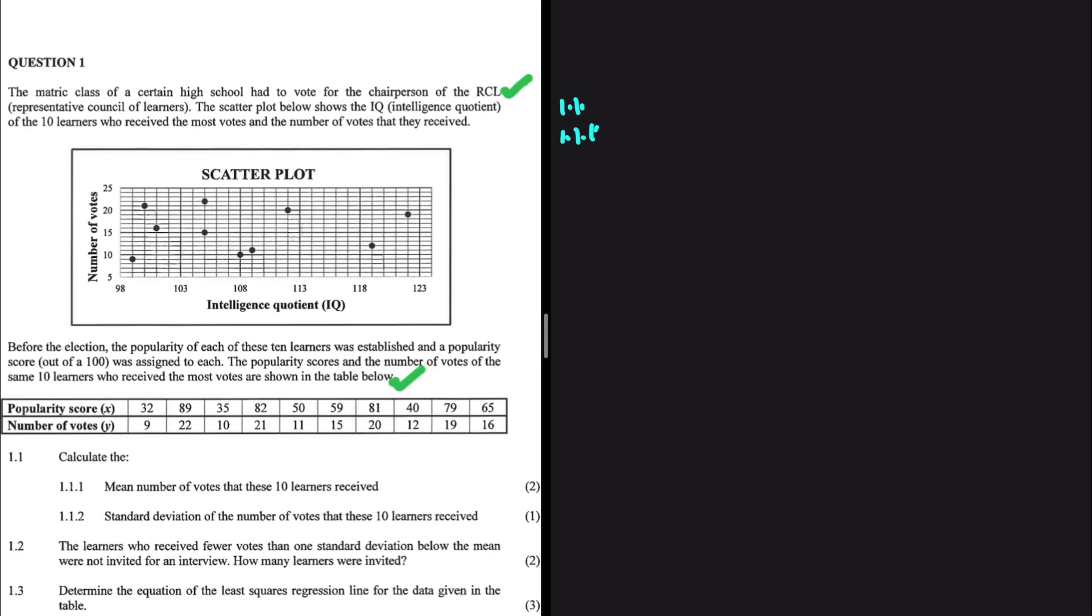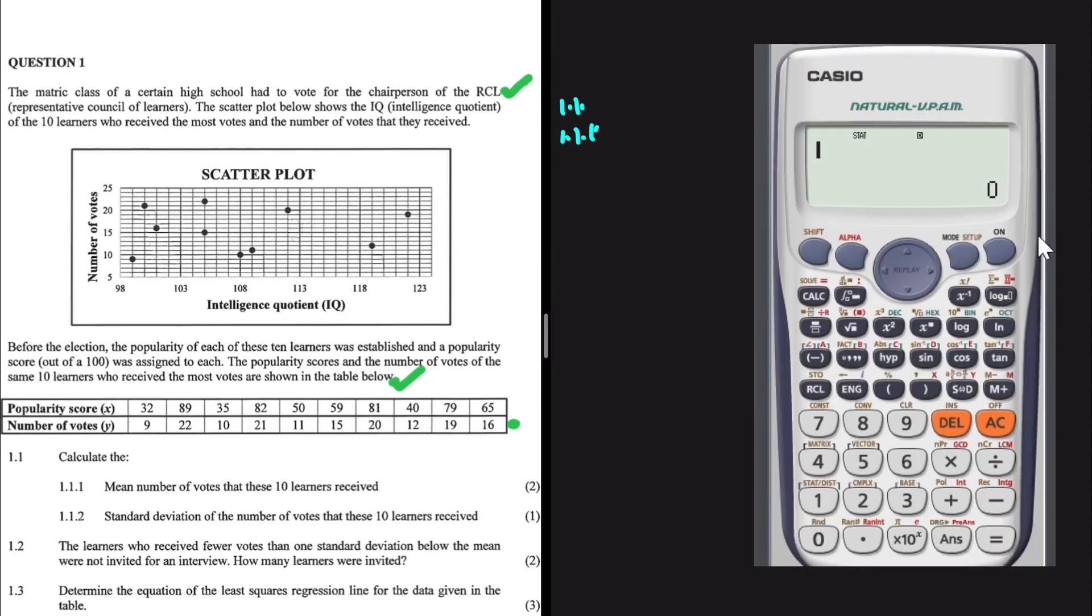I want to find the mean of the number of votes. So I'm concentrating on only one variable. So I'm going to press mode setup and then 3 for stats, 1 for one variable, because I'm only interested in one variable. So the number of votes, we have 9, followed by 22, 10, 21.